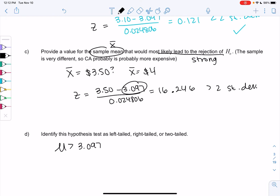And then we were trying to prove mu is greater than 3.097. So is this left-tailed, right-tailed, or two-tailed? So if we have a normal curve and we have greater than, we shade the right side. So it's right-tailed.